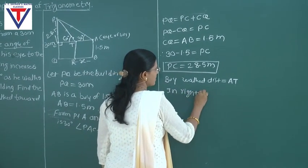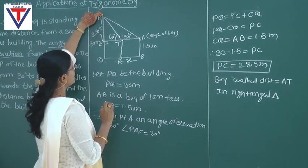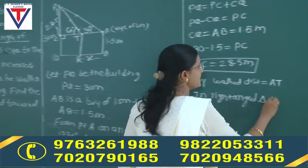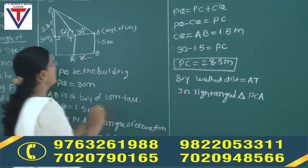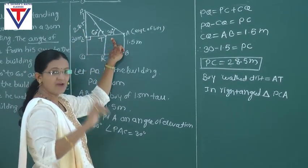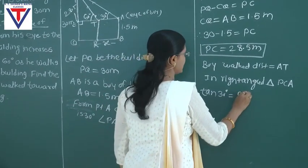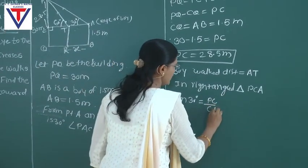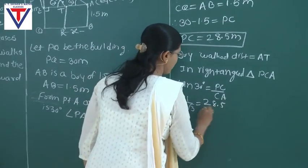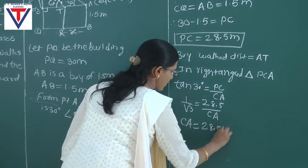In right angle triangle PCA, the angle theta is 30 degrees. We know the opposite side PC, and we need to find the adjacent side CA. We have to use tan 30. So tan 30 degrees equals PC upon CA. The value of tan 30 is 1 upon root 3. We know PC is 28.5. So by cross multiplication, CA is equal to 28.5 root 3.